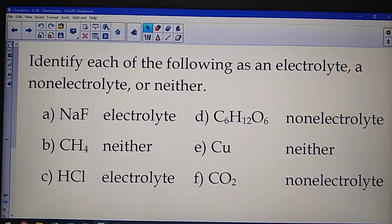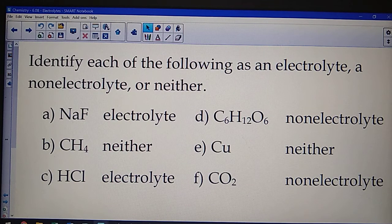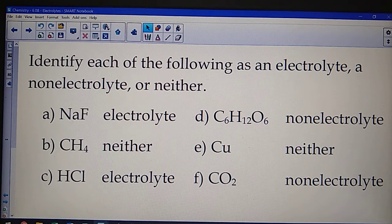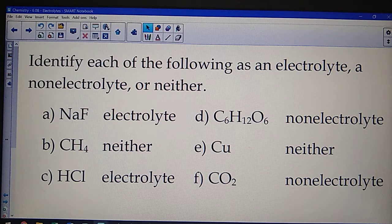Sodium fluoride is an ionic compound. So sodium fluoride would be an electrolyte. B, methane, actually is non-polar. It is a tetrahedral shape, so it wouldn't even dissolve in the first place, so it cannot be either an electrolyte or non-electrolyte. Remember, they must be dissolved in order to be one of those two.